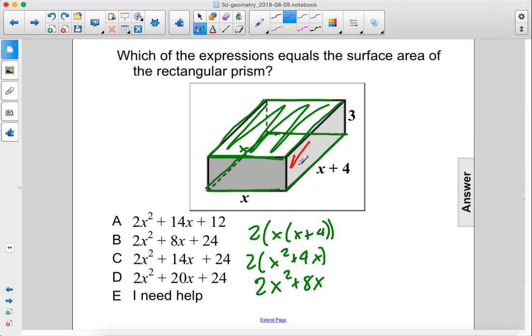Moving on to the long sides, which we have 1 there and 1 there. That's 2 times, since there's 2 of them, we'll do 2 times 3 times x plus 4. That's 6x plus 24.